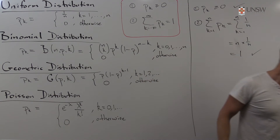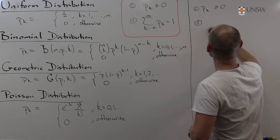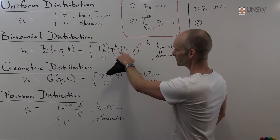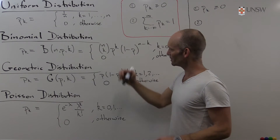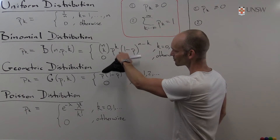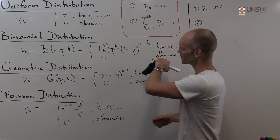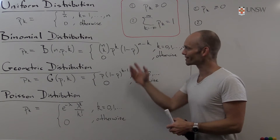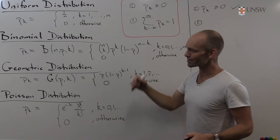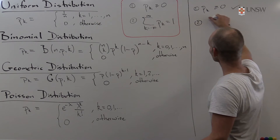For the binomial distribution, we do the same thing. First, we look at the function and see a binomial coefficient — that's non-negative. We have to figure out what p is: p is a probability between 0 and 1, strictly greater than 0 and less than 1, so any power of p is non-negative. 1 minus p also lies between 0 and 1, so that's non-negative, and so is any power of it. We just have a product of non-negative things, which is non-negative.